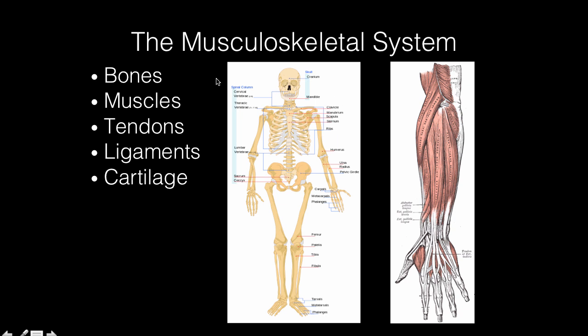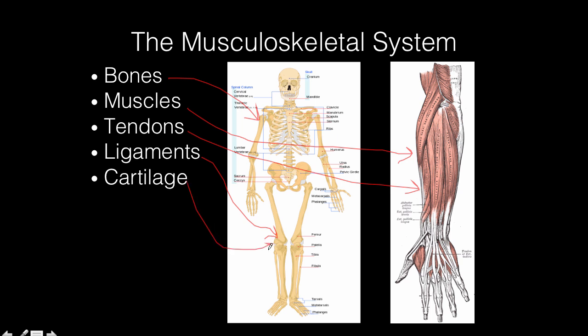Just an overview: we talked about the main parts of the musculoskeletal system. Bones create the rigid framework. Muscles pull on bones, allowing us to move. Tendons connect muscles to bones so that when the muscle contracts, it pulls on the tendon, which pulls on the bone. Ligaments connect bones to bones, holding joints together. And cartilage is found inside the joints, padding the ends of bones and cushioning them. I hope this was helpful, and if you'd like more in-depth information on the musculoskeletal system, please take a look at my other video tutorials or across the internet.